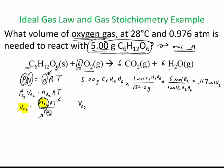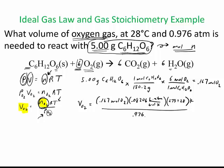So volume of O2 equals 0.167 moles of O2 times R, 0.08206, and then the temperature, 273 plus 28. This needs to be in Kelvin. And the pressure they gave us is 0.976 atm.